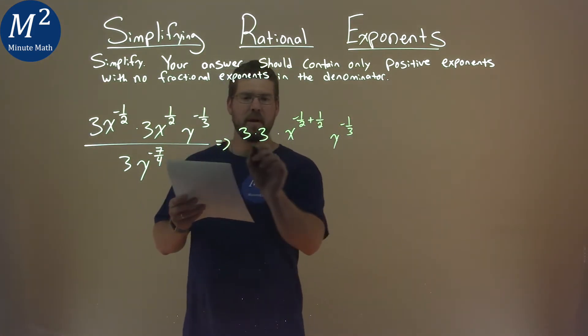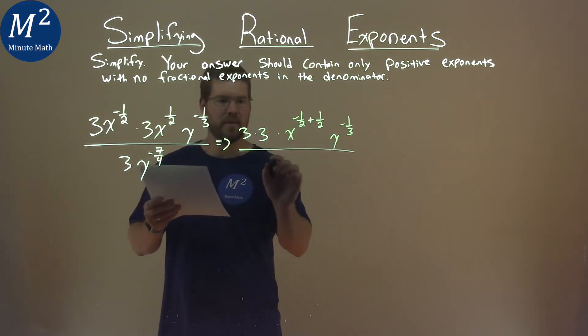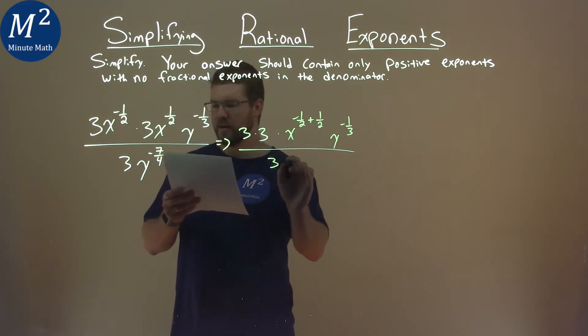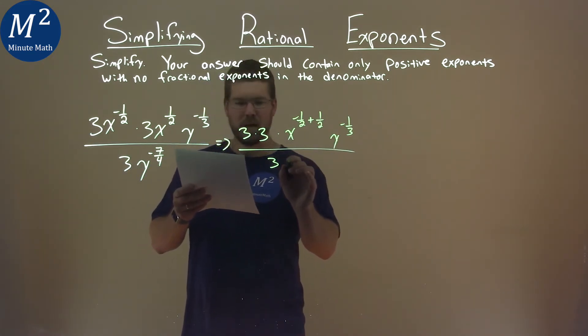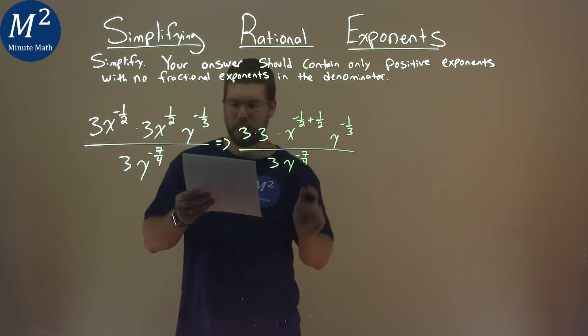And then we just have our y to the negative one-third staying there. Then the denominator really doesn't do anything, so we have 3 here, and we have y to the negative seven-fourths power.